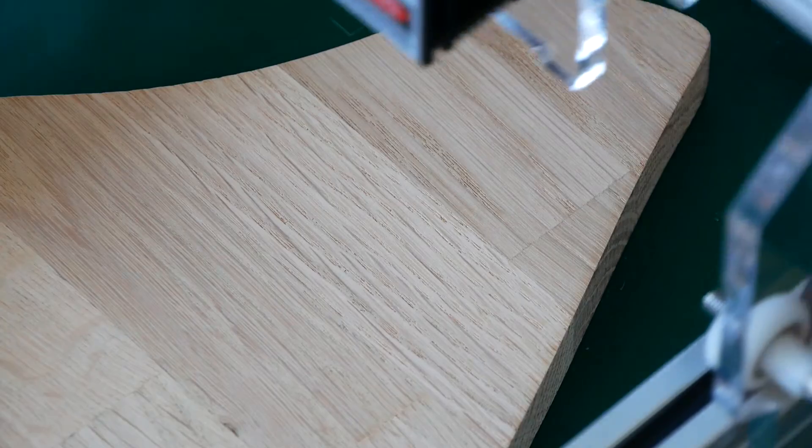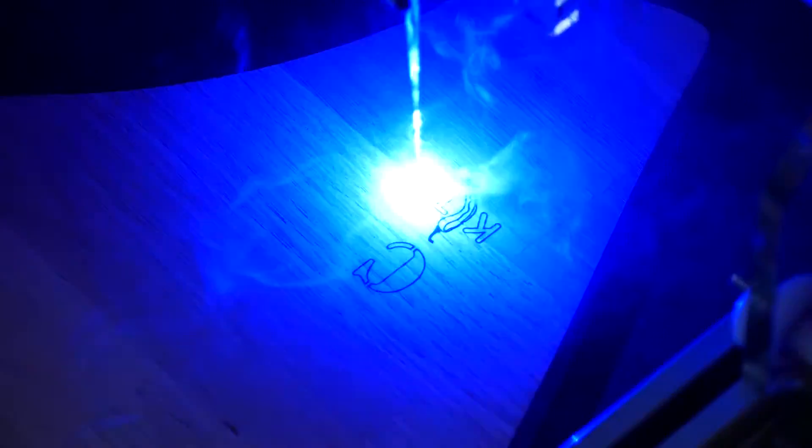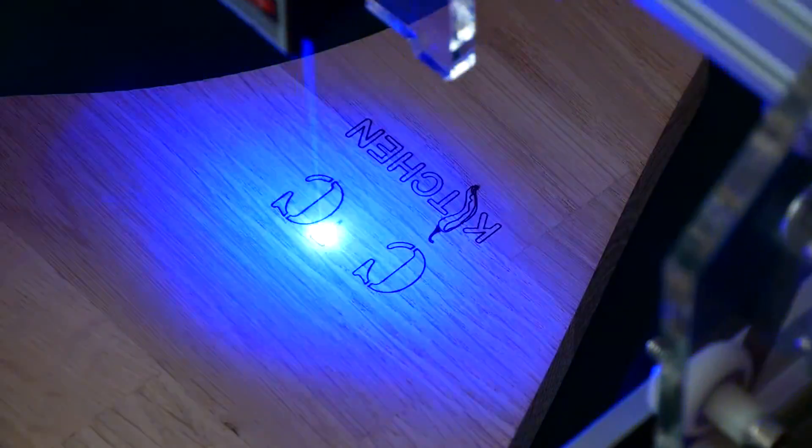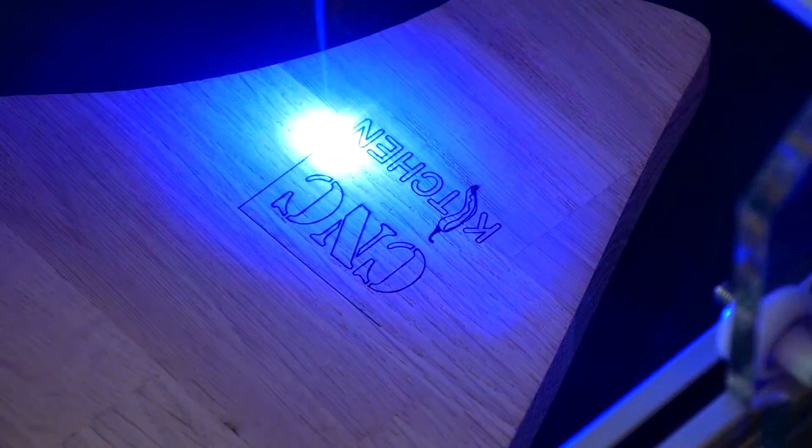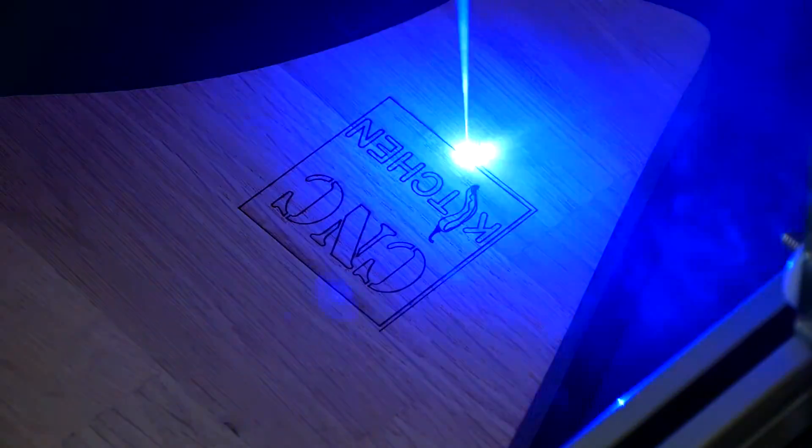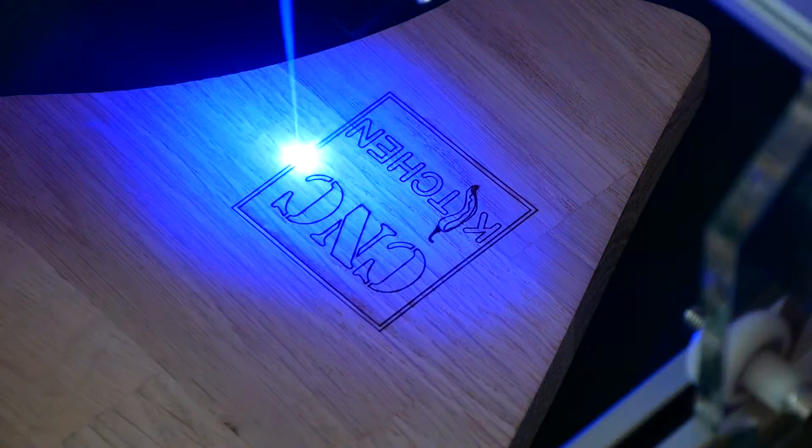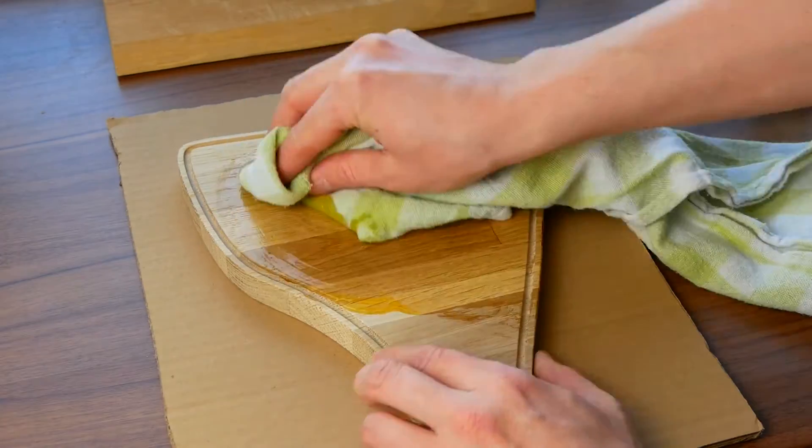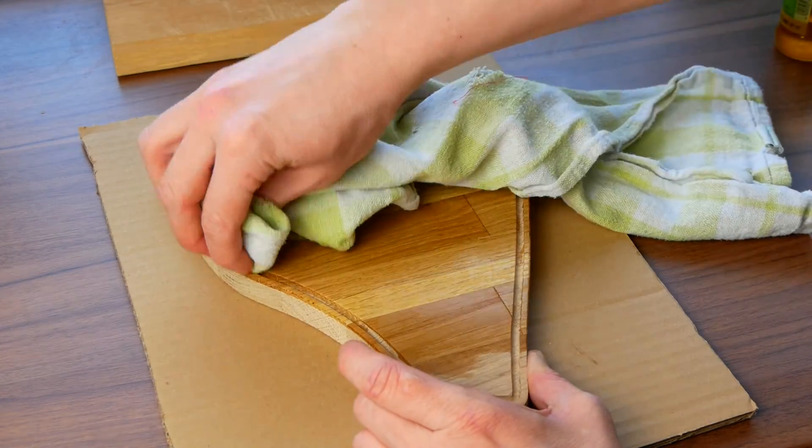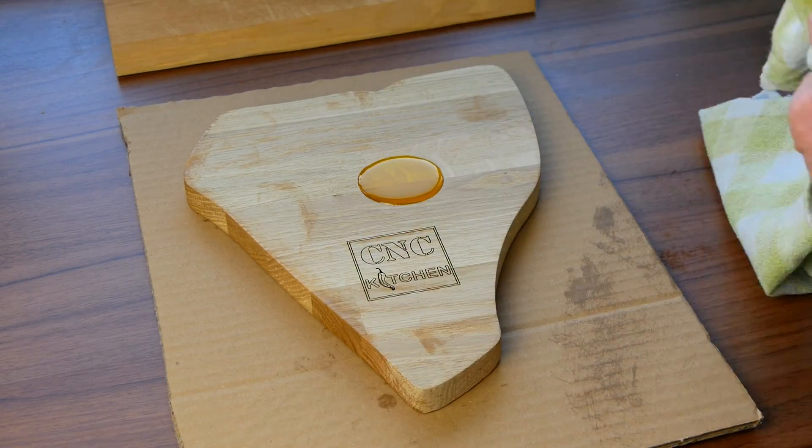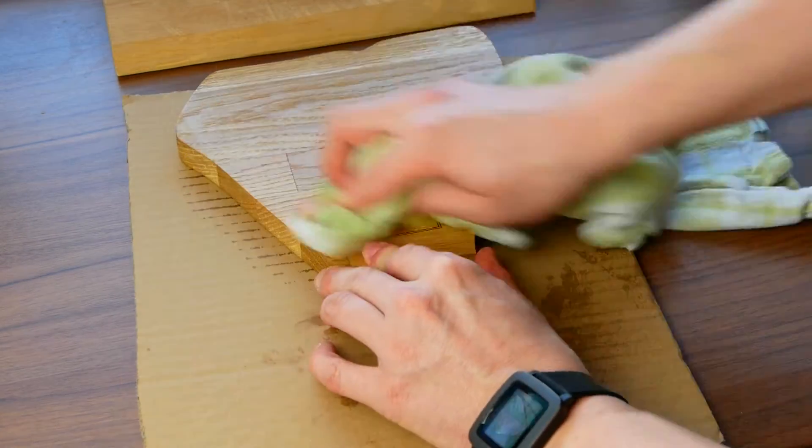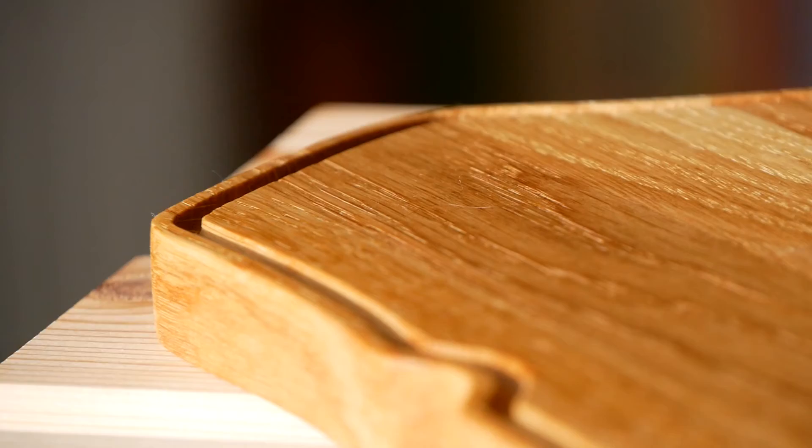I couldn't resist marking the board with my laser engraver which I bought last year from Banggood. You can find a link to it down in the description. If you want to learn more about it let me know down in the comments and I'll make a video about it. In order to finish the board I used linseed oil because it is easily available in my local supermarket. There are special cutting board oils available which are usually made of mineral oil but linseed oil worked well for me so far.